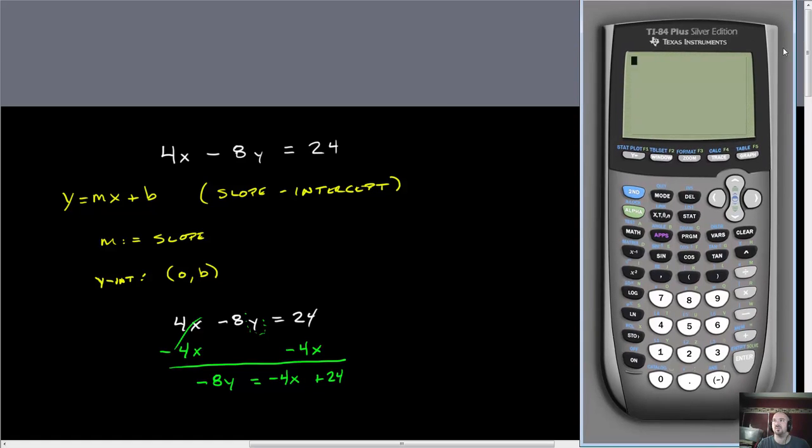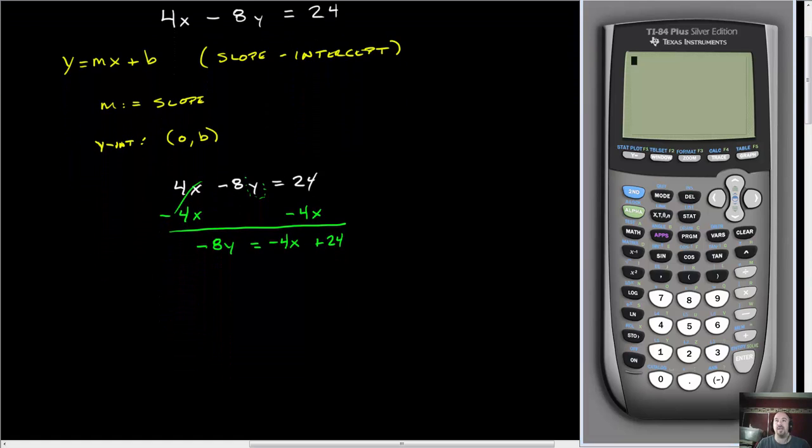Now I'm going to divide both sides by negative 8. Negative 8 divided by negative 8 gives me y. On this side, I'm going to separate this out. Negative 4 over negative 8 times x, and then plus 24 over negative 8. From here, reduce. This is y equals one-half x minus 3. So we have negative 3 as our y-intercept. Our point is going to be (0, negative 3).